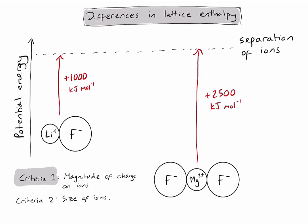Let's also check criteria two. Well, the size of the ions—they're drawn approximately to scale in these diagrams—they're pretty similar in size. So in this case, criteria two is not an important factor.